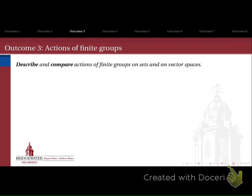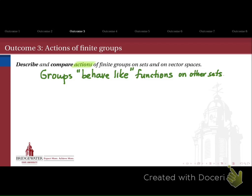Outcome number three is to look at actions of finite groups — describing and comparing the actions of a finite group on a set or on a vector space. What a group action tells us is that groups can behave like functions on other sets. Think about the symmetric group S3, the symmetric group on three symbols. We can think of that symmetric group as acting on any three symbols we like — for instance, the set containing objects A, B, and C has an action of S3 on it.